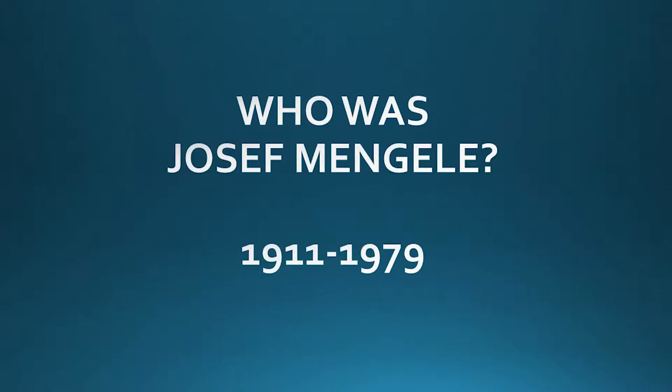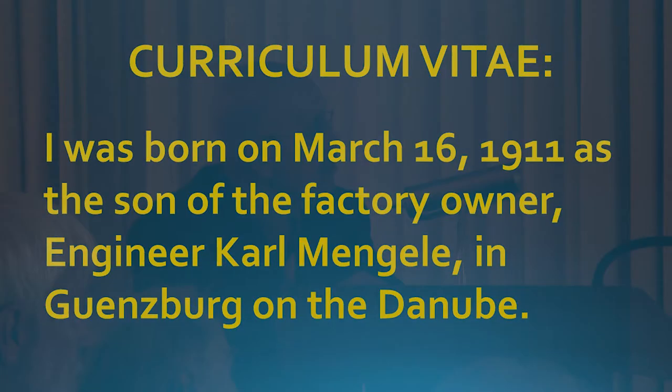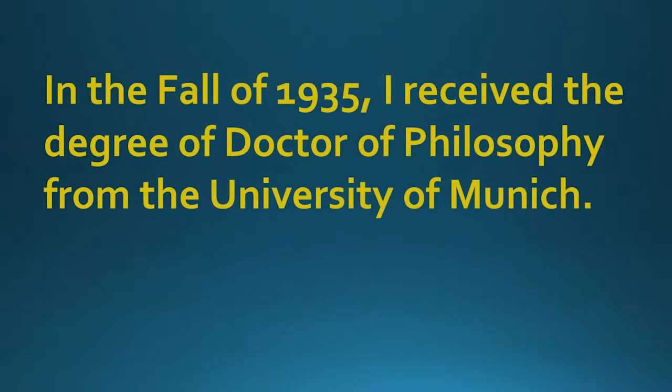Joseph Mengele was born in 1911 and he died in February 1979. In his curriculum vitae, in his own writing, he wrote down that he was born in March of 1911, and he was the son of a factory owner — an engineer called Mengele in Günzburg on the Danube. He received his PhD degree in anthropology from the University of Munich in 1935.